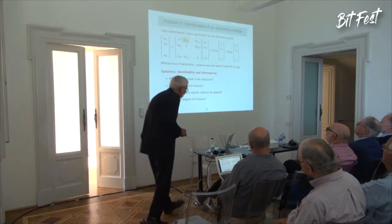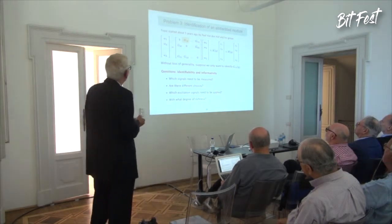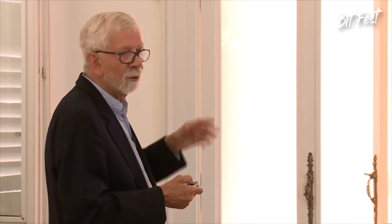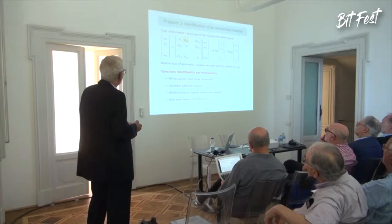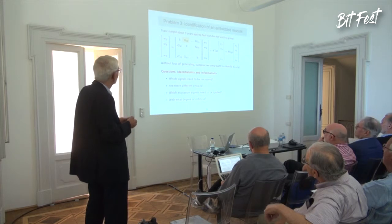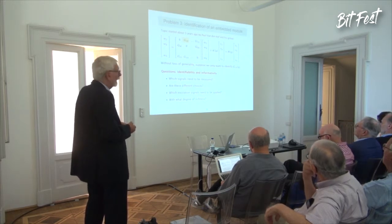Problem number three is identification of just one embedded module. Paul van den Hof and his group started working on this problem — it was the first problem they addressed about five years ago. This raises questions about identifiability and informativity: what signals do I need to measure to identify just G12? Do we have different possible choices? Which excitation signals need to be applied, and what degree of richness is required from these excitations?